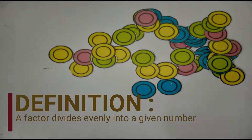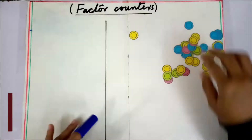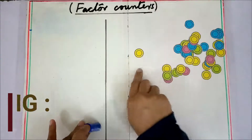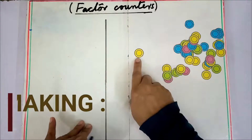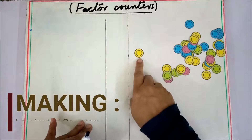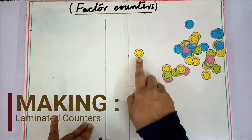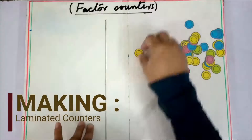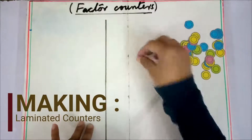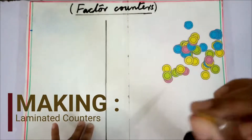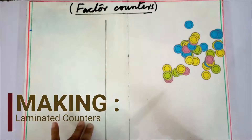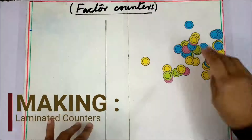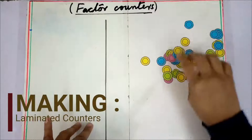First of all you have to make these types of counters for your students. I drew them in Paint, got them printed out, and then laminated them. You will see on the screen — I have laminated them and this is how we have the counter.